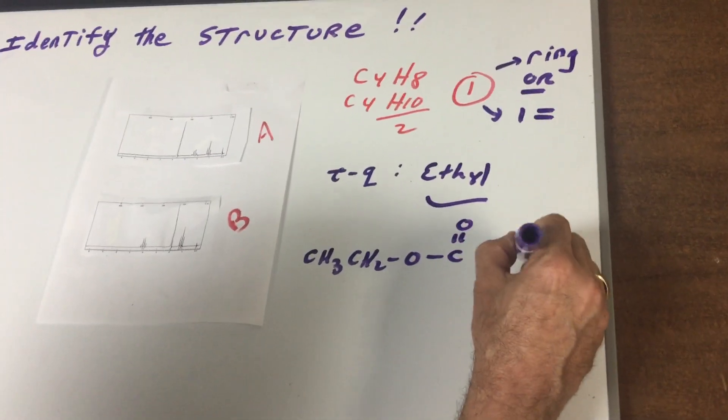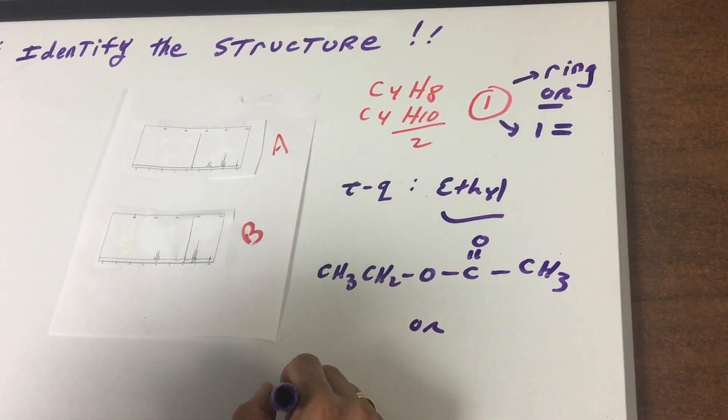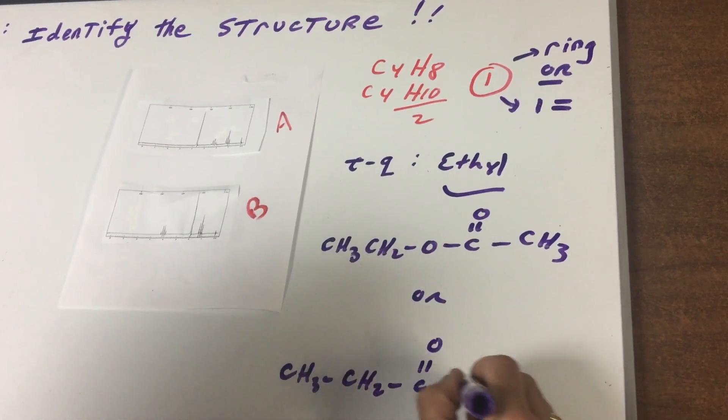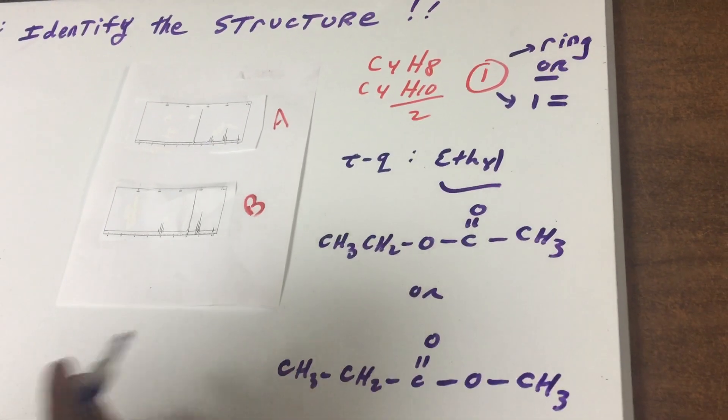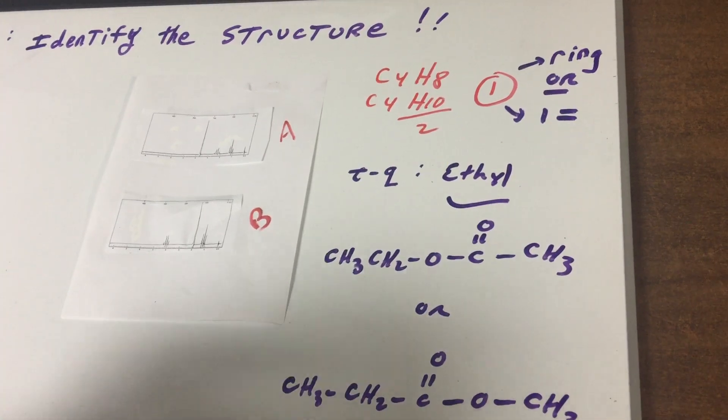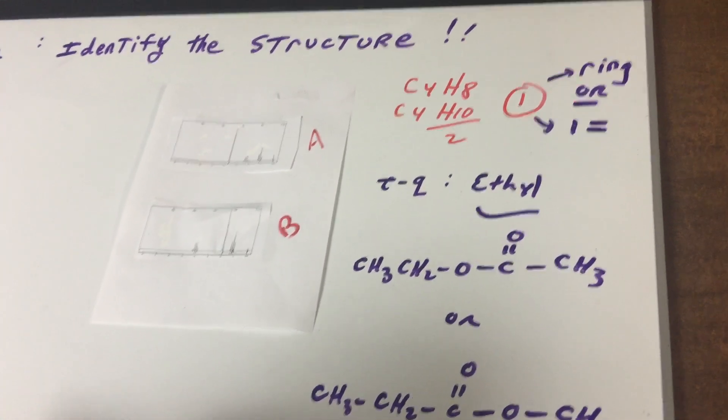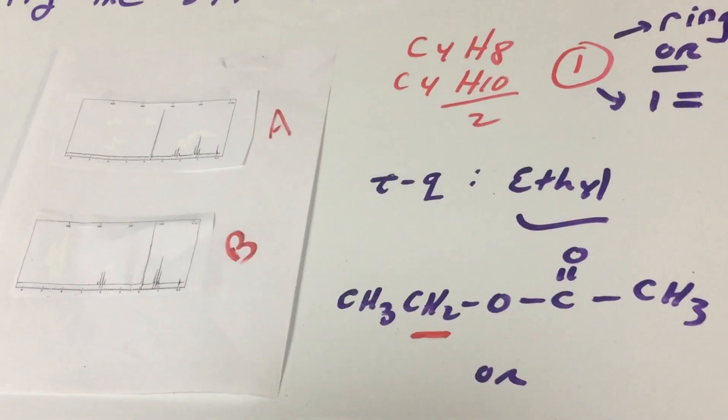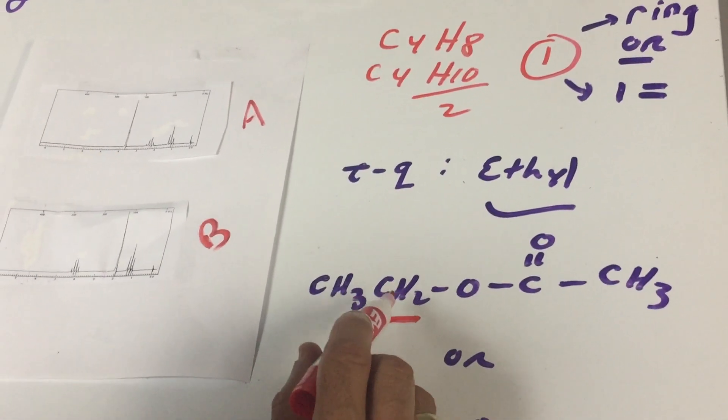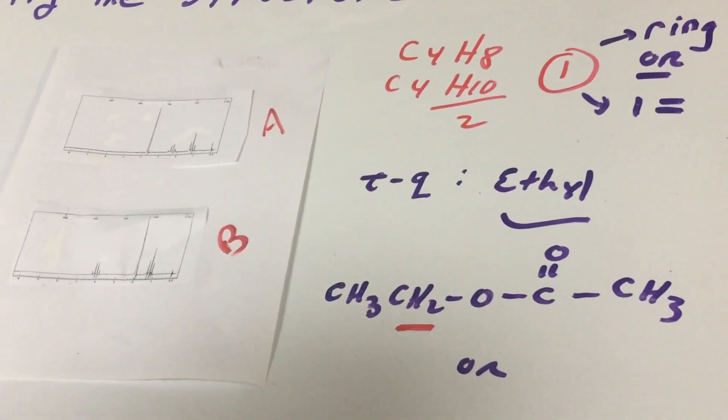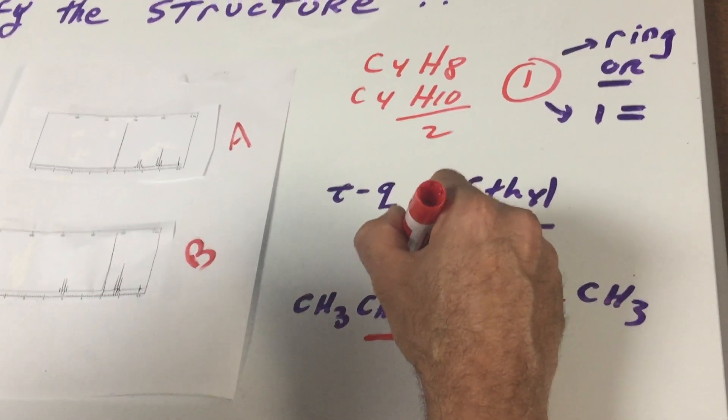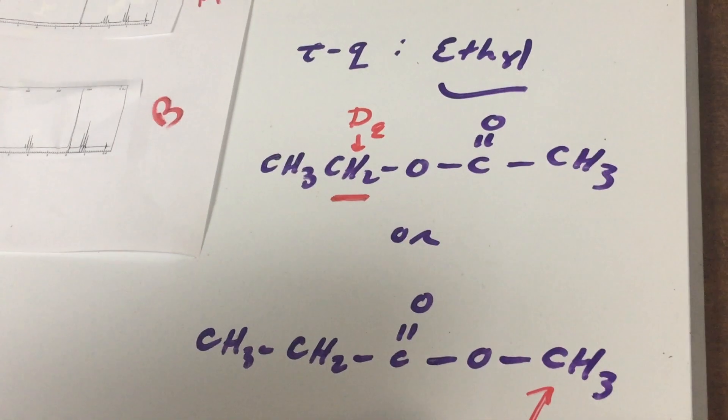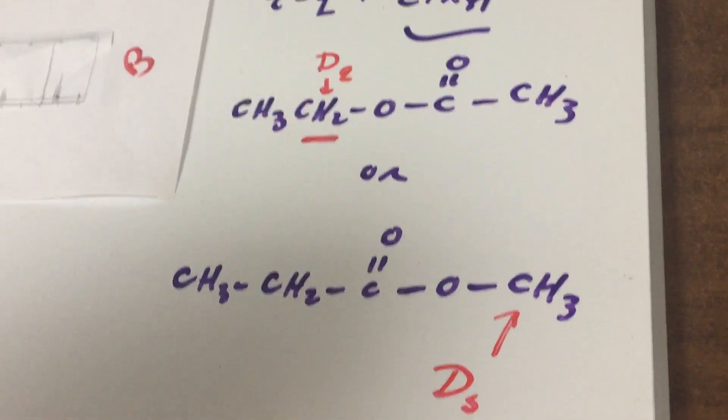If they both contain an ethyl group, I can write this as a possible structure or I could have wrote something like this as a possible structure. This would be a multiple choice format so it would be a lot easier. What I always teach my guys to do is look at the signal that's the most downfield. I think you can see that this would give the most downfield signal, so I would expect to see a downfield quartet.